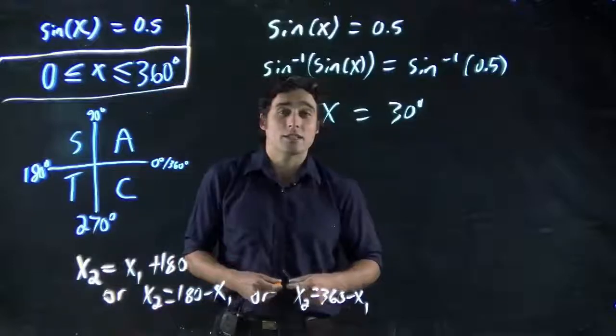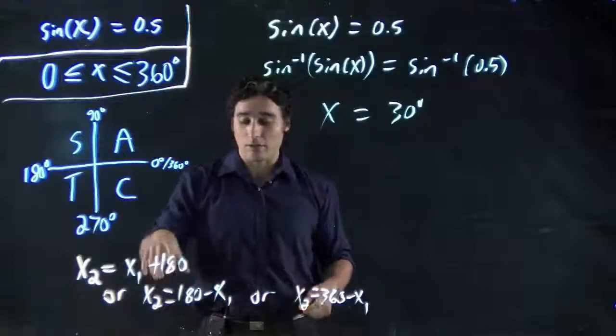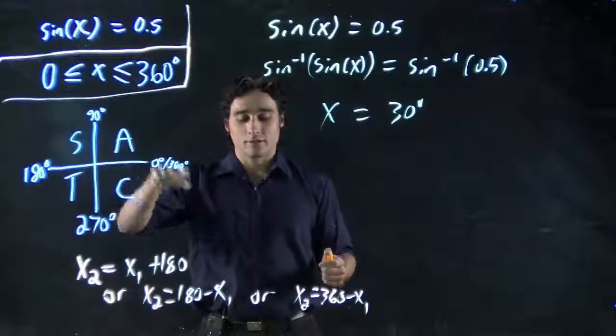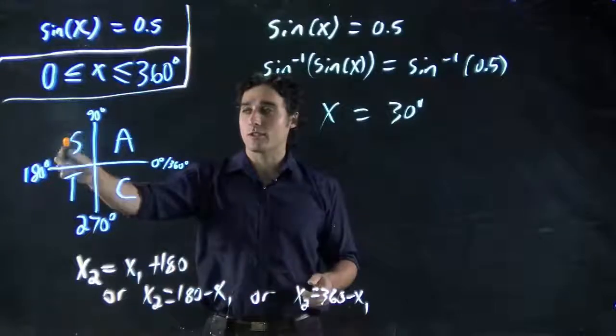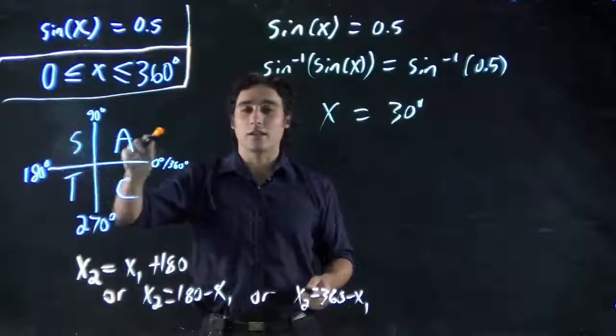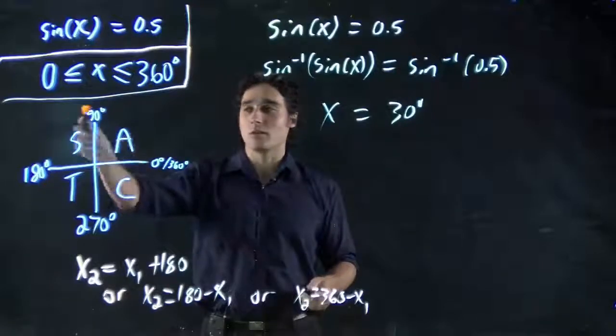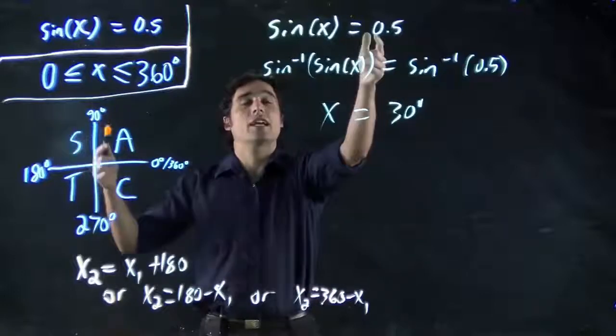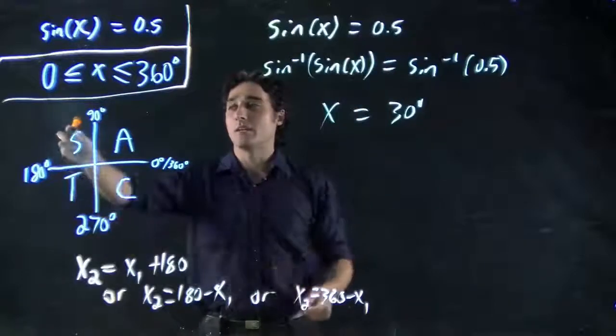But how do you know which one of these to consider? We can remember these are three possible cases. But this goes back to CAST again. We want to get an answer in this region. We just saw the first answer we got was in this region. We want the second one to be in this region because we need sign to be positive. Just looking at the initial value. Sign was positive. We need sign to be positive.